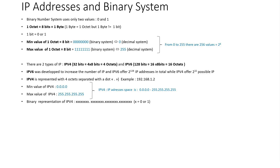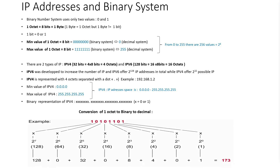Now I will show you an example of how we can convert a binary number to a decimal number. To convert this binary number to decimal, we take the digit on the right and multiply this digit by 2 to the power of 0. The result is 1. We take the next digit, 0, and multiply it by 2 to the power of 1. The result is 0. We do the same operation for all digits, and the final result is the sum of all intermediate results. This number is the decimal representation of this binary number.